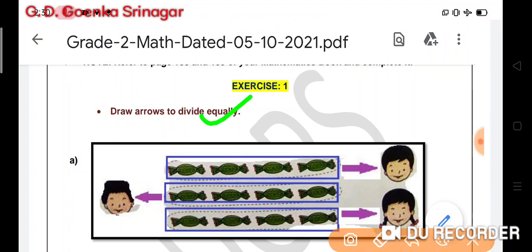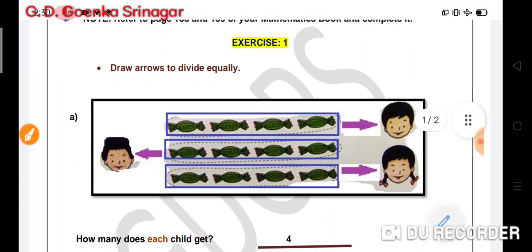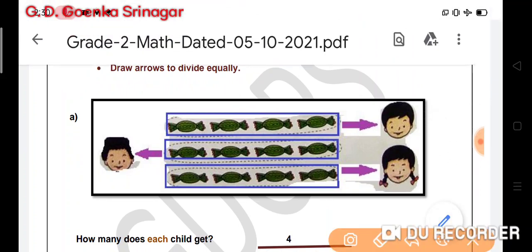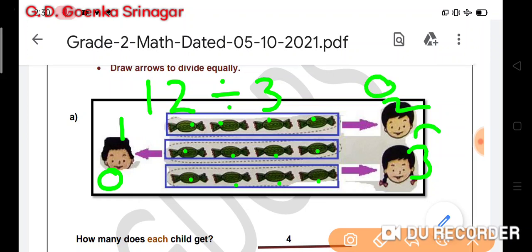In part A, I am having some toffees which are to be equally divided among 1, 2, and 3 kids. Let us first see the total number of toffees: 1, 2, 3, 4, 5, 6, 7, 8, 9, 10, 11, and 12. So 12 toffees are to be divided equally among 3 kids. I will start my distribution: 1 toffee, 1, and 1 to each.